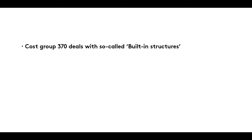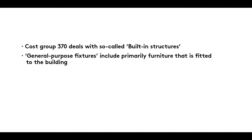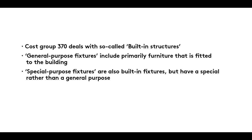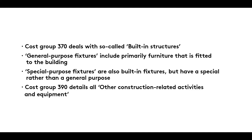Summary: Cost Group 370 deals with so-called built-in structures. General purpose fixtures include primarily furniture that is fitted to the building. Special purpose fixtures are also built-in fixtures, but have a special rather than a general purpose, such as a church organ. Cost Group 390 details all other construction-related activities and equipment, including auxiliary items necessary to the construction of a building, but which do not remain as part of the structure itself after completion, such as site facilities.